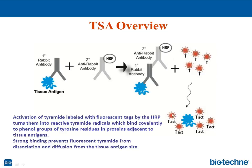HRP activates the tyramide, which can then bind to tyrosine residues in proteins — specifically to the phenol group — and it binds so tightly that we no longer need the presence of primary and secondary antibodies. The activated tyramide binds to these phenol groups not only in the protein of interest, but also in proteins adjacent to it. That's how tyramide signal amplification works in a nutshell.